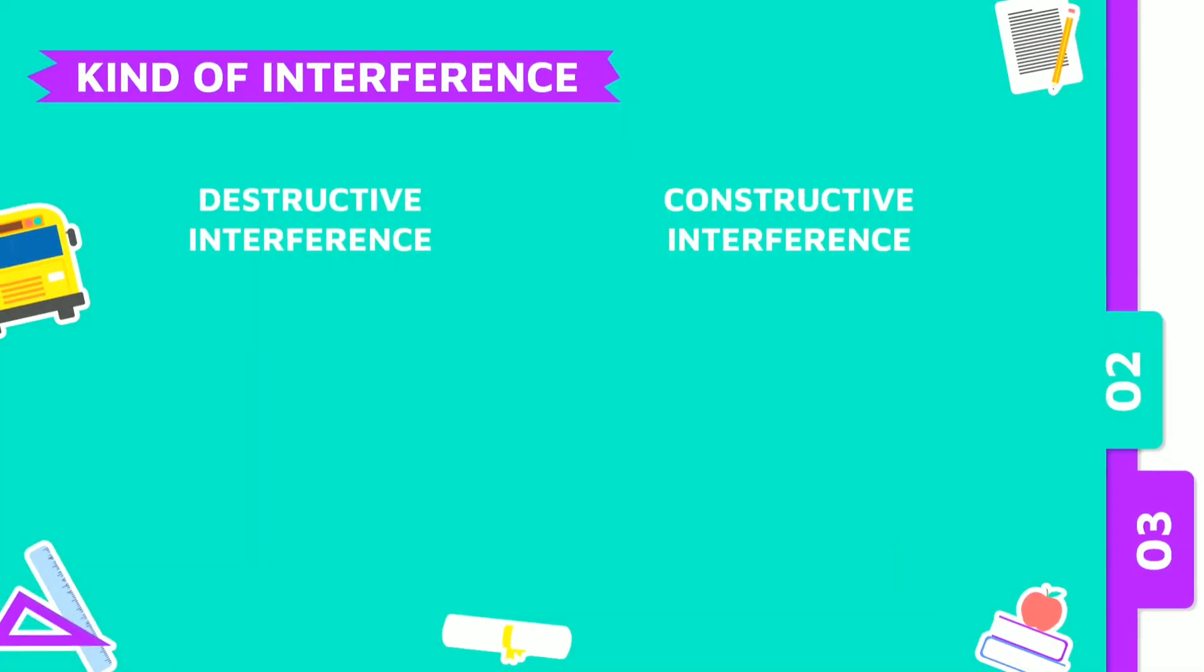We move to the first example, destructive interference. So we have two waves on the same medium. The first wave is a crest with the second wave in the form of a trough. The moment they meet, they will reinforce or cancel each other until it turns out like this. They make a straight line. This is called destructive interference.